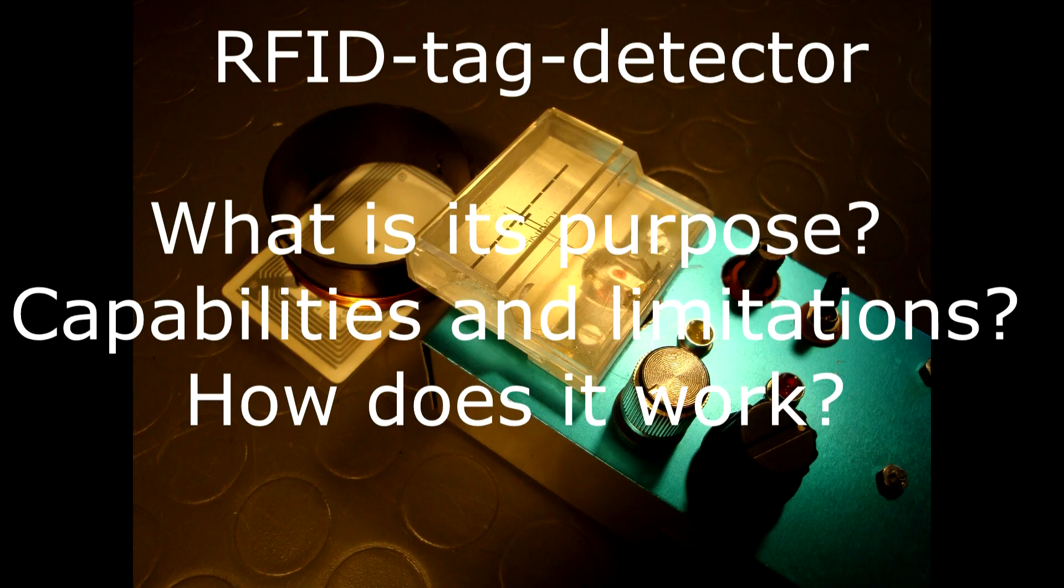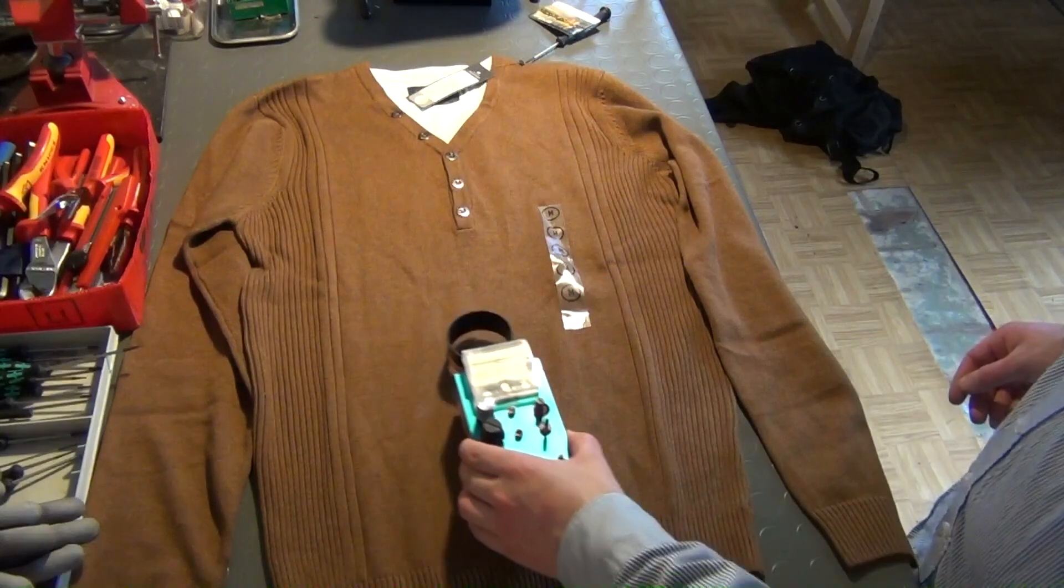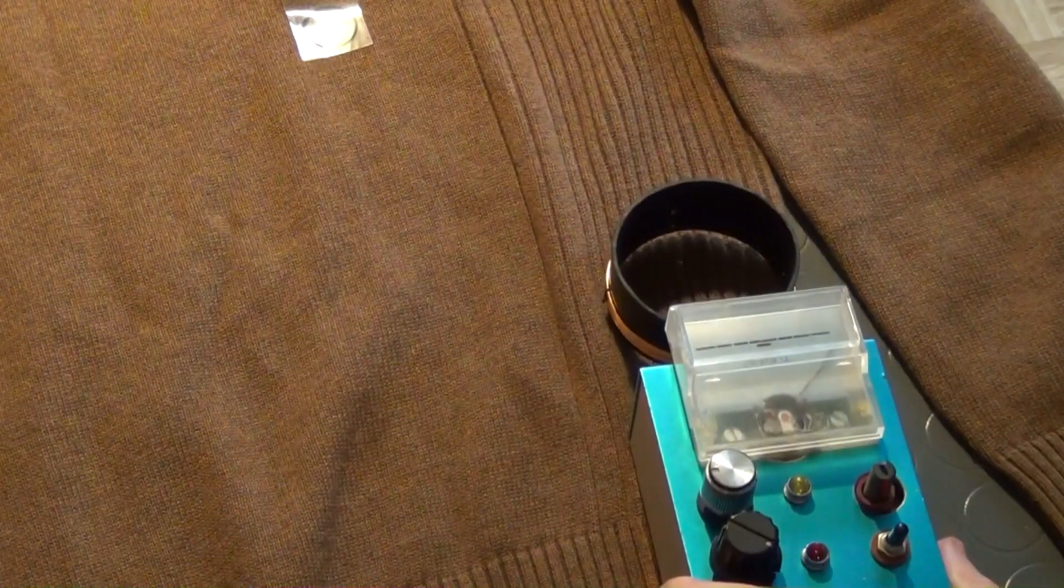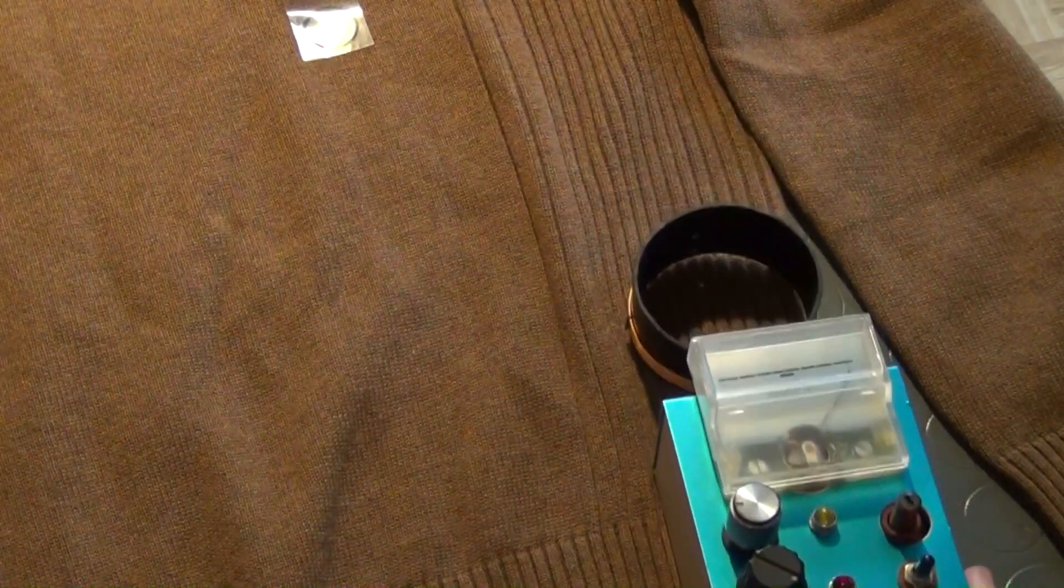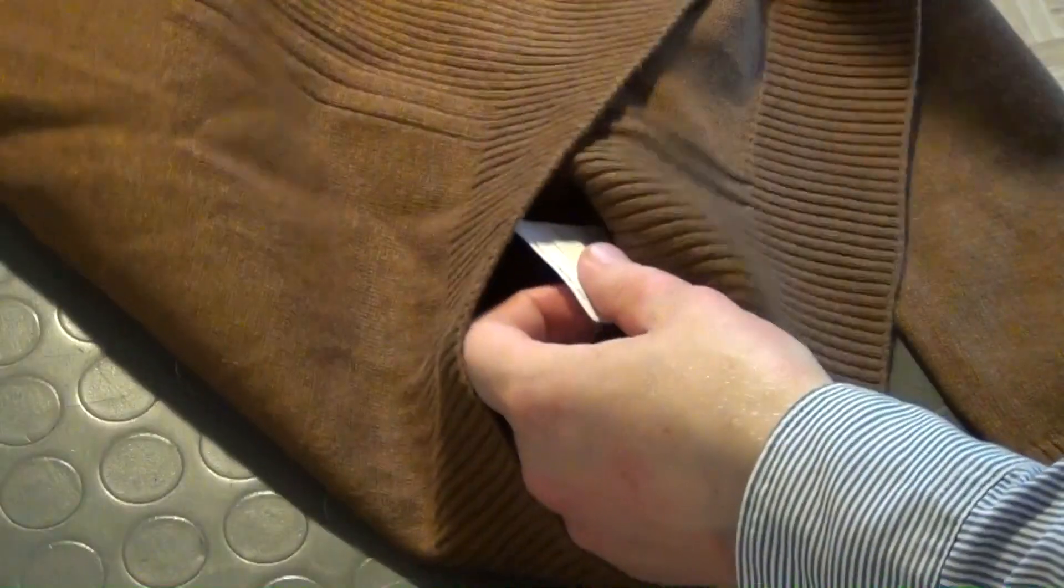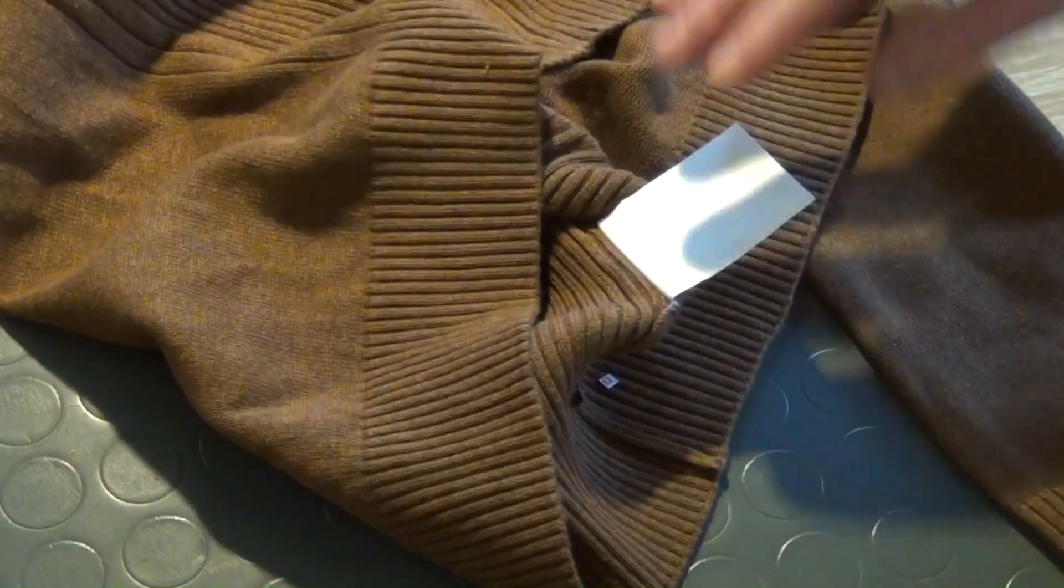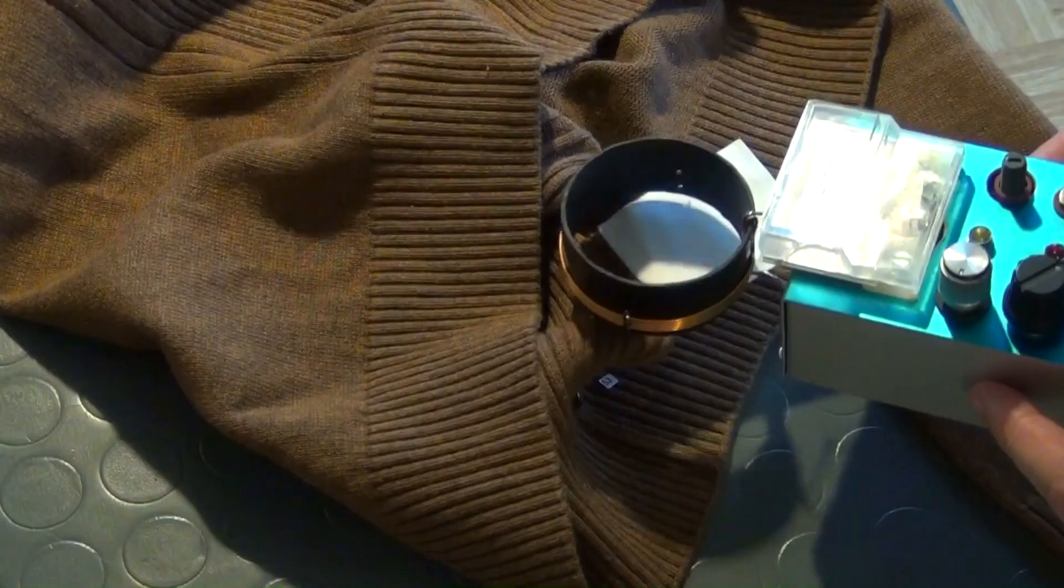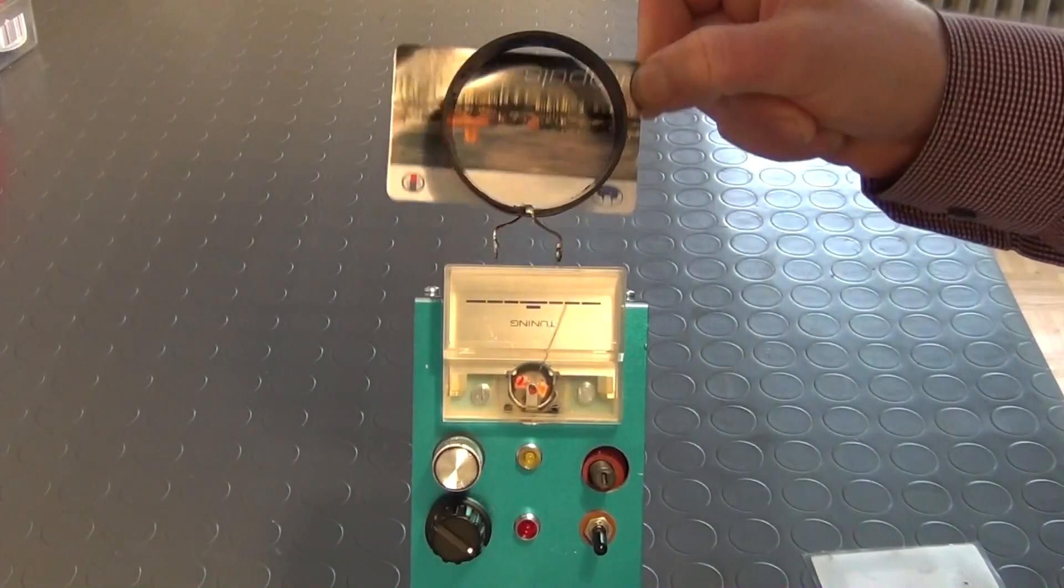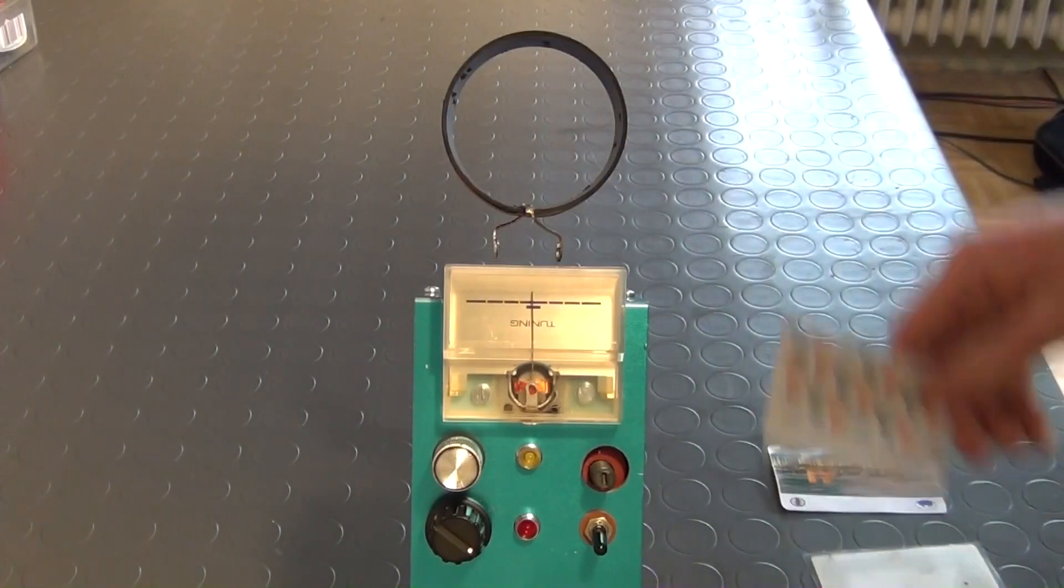Now let's come to the first question. The purpose of the RFID Tag Detector is to find RFID Tags that are hidden in everyday items. It can be used to search for RFID Tags in pieces of clothing, like I have shown in my video about hidden RFID Tags in your everyday life. It also can be used to test if your credit cards, ID cards or tickets contain RFID Tags.